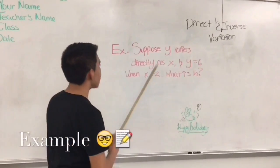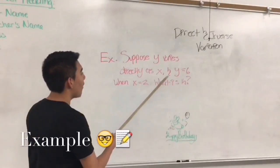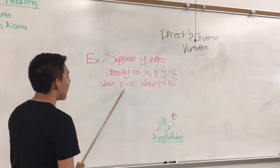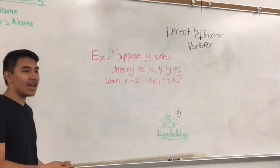The example that we have for direct variation is suppose y varies directly as x. y equals 6 when x equals 2, what is k? Catherine, would you answer this question? Sure.